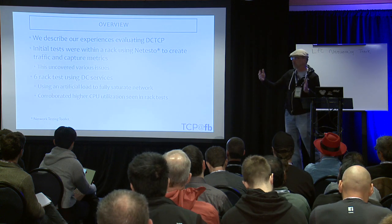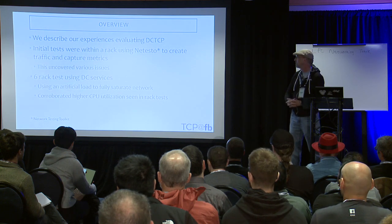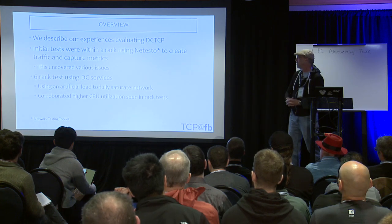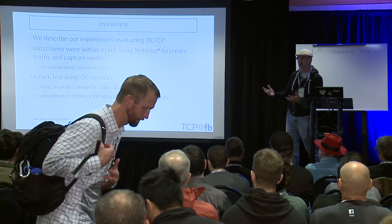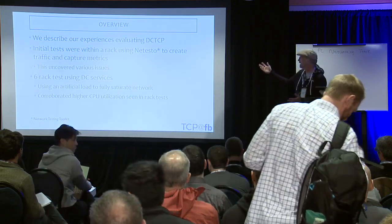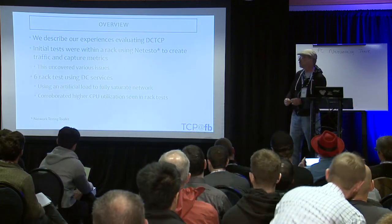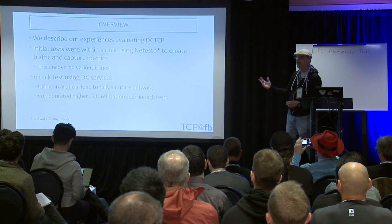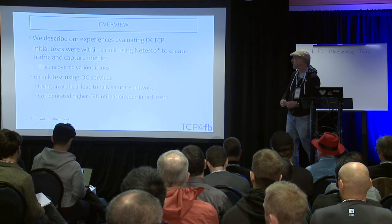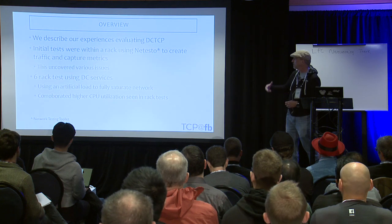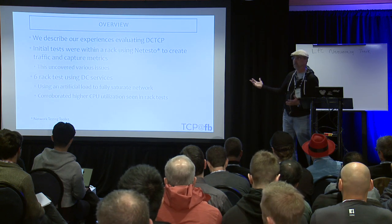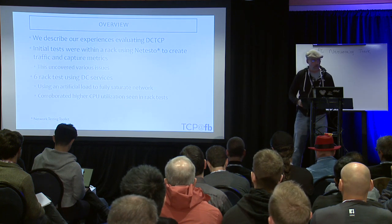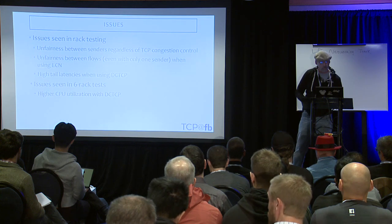That's an introduction to ECN and DCTCP. We're going to describe our experiences evaluating DCTCP. We ran two types of tests: initial tests within a rack using Netesto — the Network Test Toolkit — to create traffic and capture information about congestion and metrics. This uncovered various issues. The following tests were run using six racks testing some data center services.